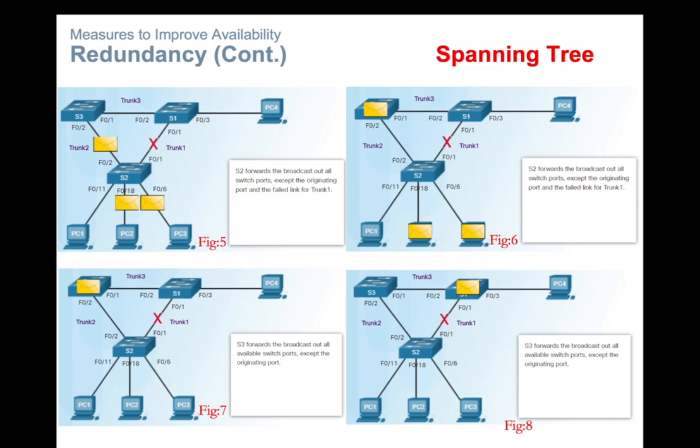This demonstrates the use of redundancy with spanning tree — it won't allow any loops, but redundant paths still exist between the source and the destination.